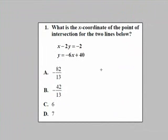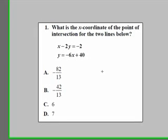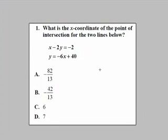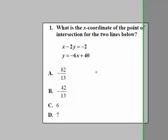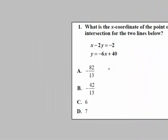Alright, for question one: what is the x-coordinate of the point of intersection for the two lines below? In this problem we're dealing with a linear system. Three ways to solve a system are by graphing, elimination, or substitution. Substitution is the ideal way to solve this problem, since the second equation is already solved for the y variable — y equals negative 6x plus 40. I am going to substitute that expression, negative 6x plus 40, in for y in the first equation.